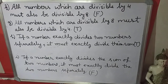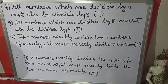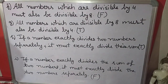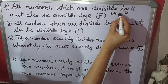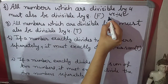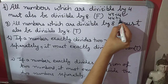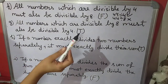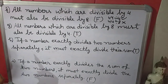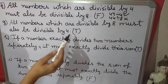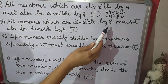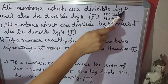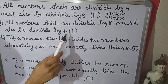F part: all numbers which are divisible by 4 must also be divisible by 8 — it is false. If we take 44: 44 is divisible by 4, but 44 is not divisible by 8. So this statement is false. G part: all numbers divisible by 8 must also be divisible by 4 — yes, it is true. Because 4 is a factor of 8, whereas 8 is not a factor of 4.